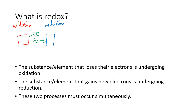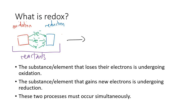Oxidation can involve losing many electrons or just one electron, and they all have to be taken by something else. Note that the two substances shown are not reactants and products — they are in fact both reactants. They turn into two new substances: one with fewer electrons and another with more electrons.